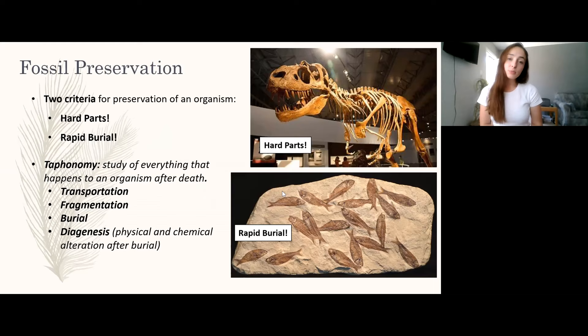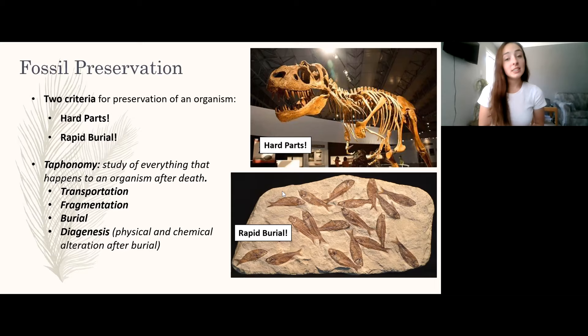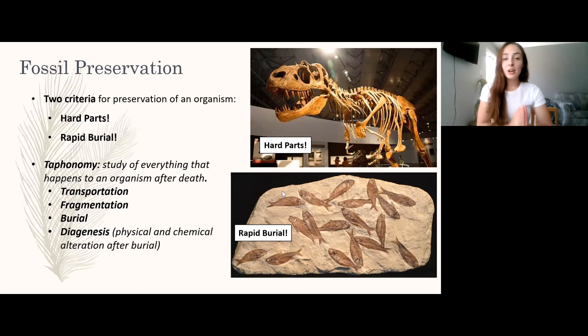In this video I'm going to be going over fossil preservation. Fossil preservation requires two main criteria: hard parts and rapid burial. Hard parts are things like bones — this reconstruction of a dinosaur was made from its bones, not any of its fleshy bits, because those decompose quickly. Rapid burial is important because these fish were preserved in an almost perfect way; without it, they would have been eaten or decomposed by bacteria.